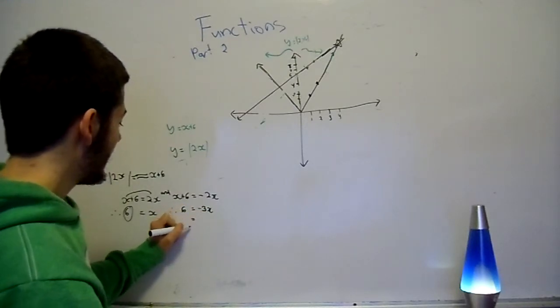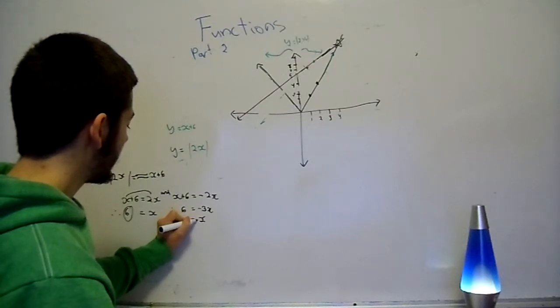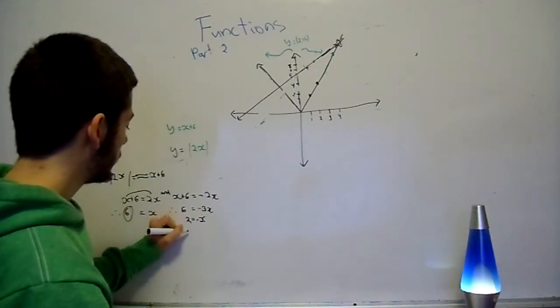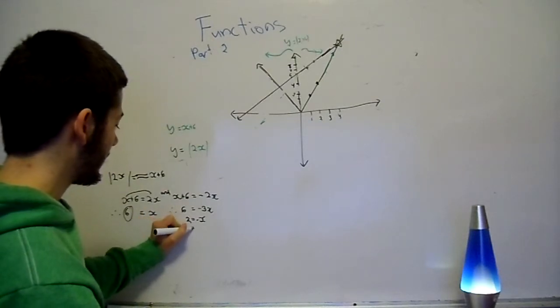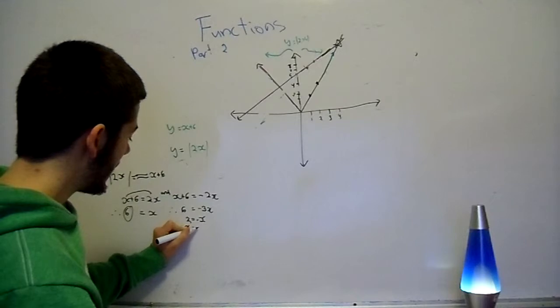Alright? And that is going to equal minus x is equal to 2. And then when we flip that round, because we always want the x to be positive, x is equal to minus 2.